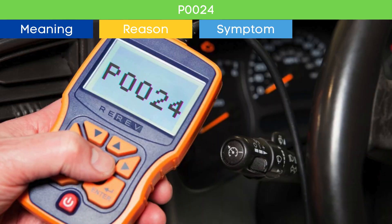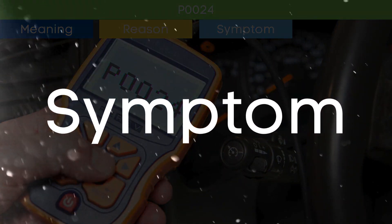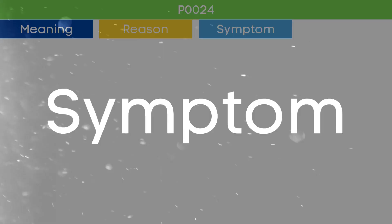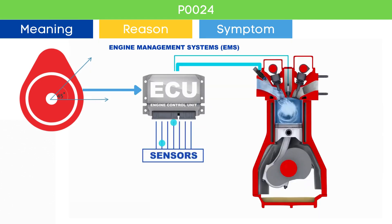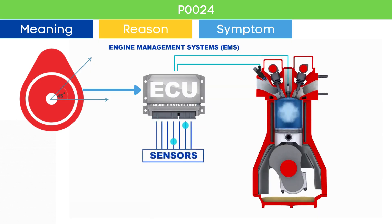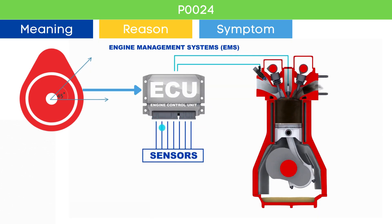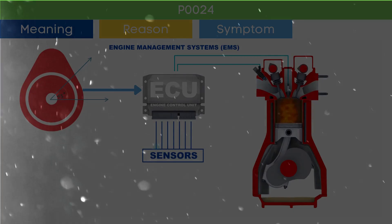Now that we know what the P0024 OBD-II code is, let's dive into the symptoms of P0024. Cam angle is a very crucial parameter in engine management systems to optimize the engine's performance. Due to the P0024 code, there may be an issue in engine performance.